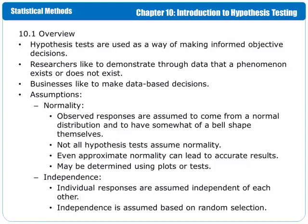There are certain assumptions associated with hypothesis tests that have to be met in order for the results of the hypothesis test to be accurate. Those assumptions include normality and independence. Observed responses are assumed to come from a normal distribution and to have somewhat of a bell shape themselves. So if you look at the data, you should be able to create a histogram and it should have somewhat of a bell shape to it.